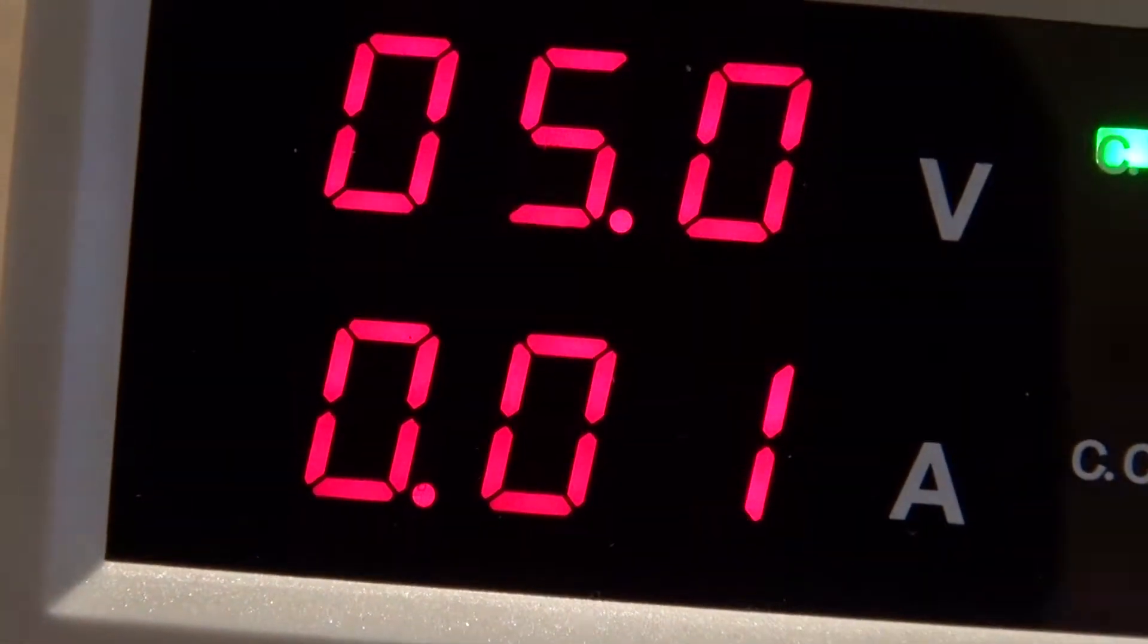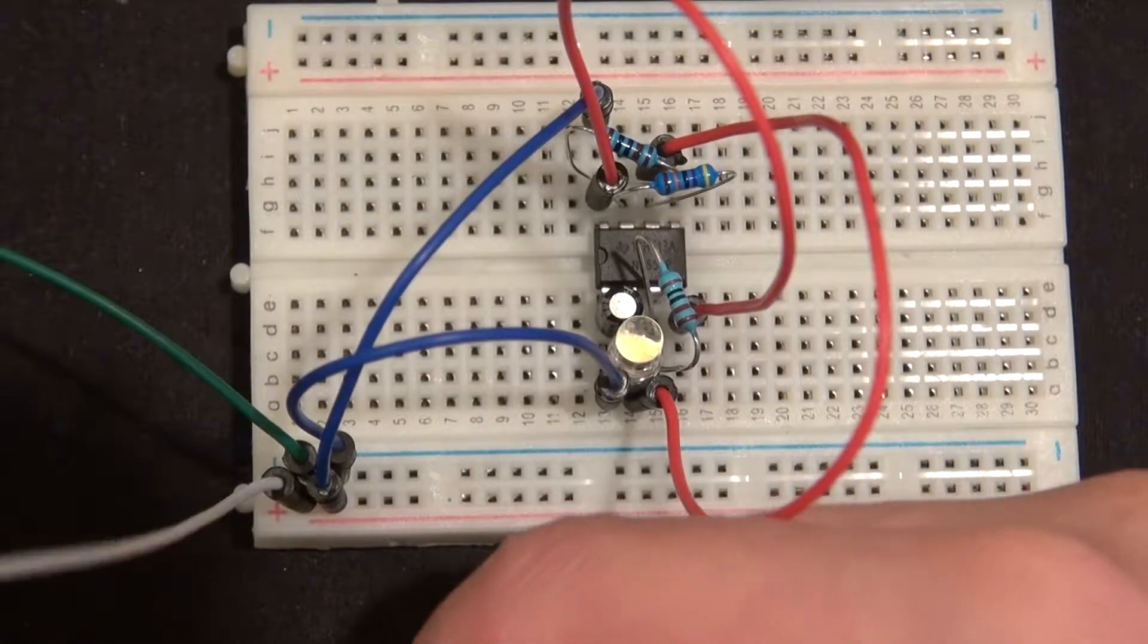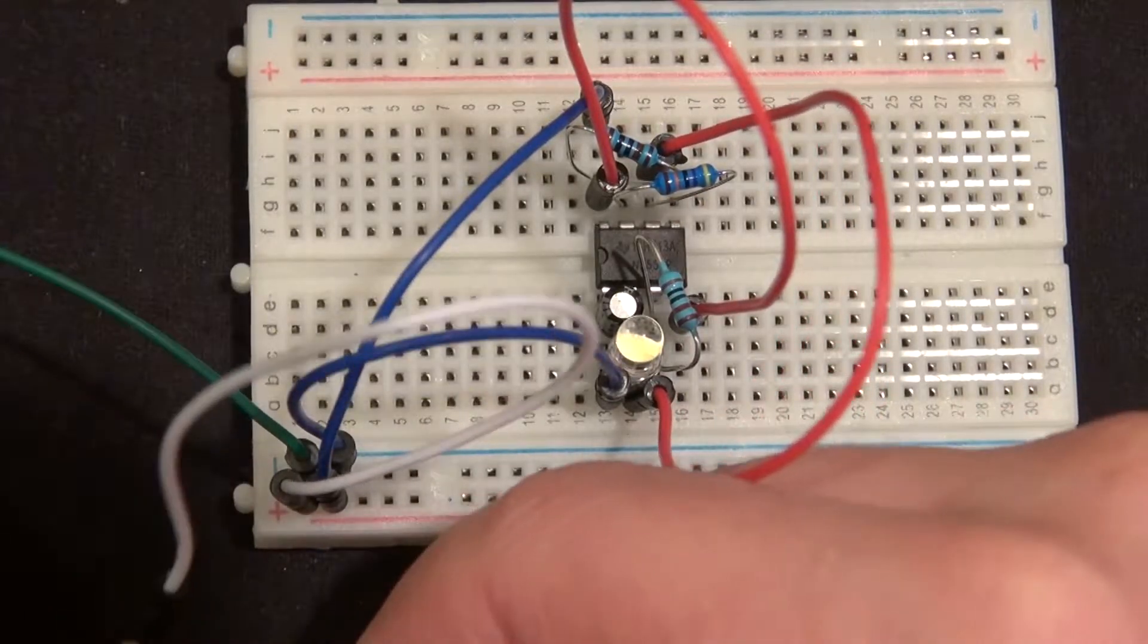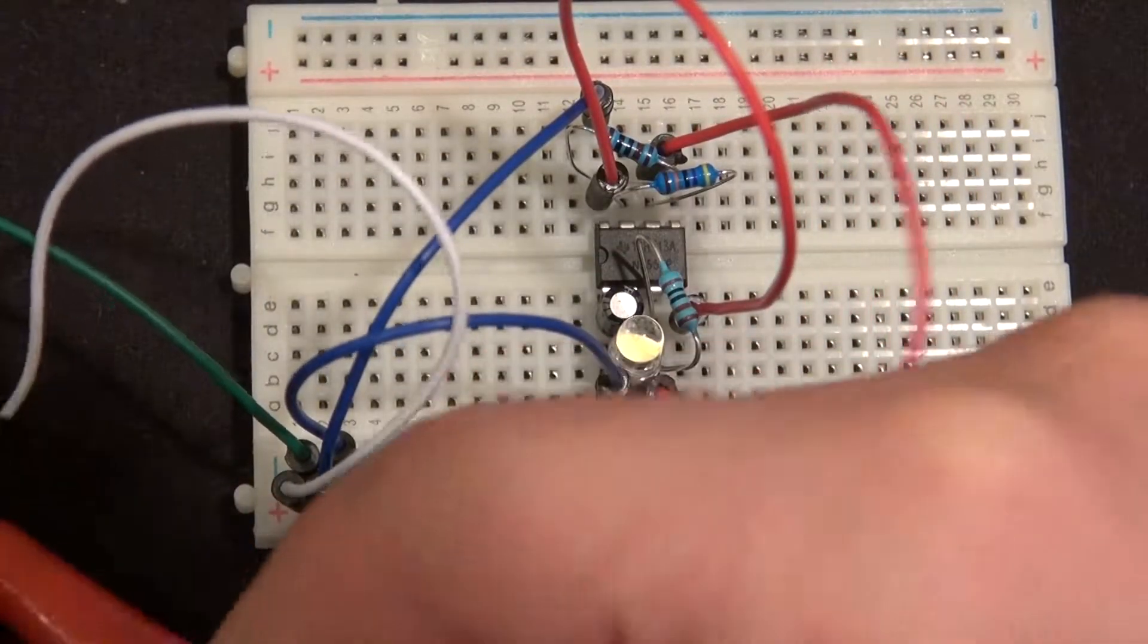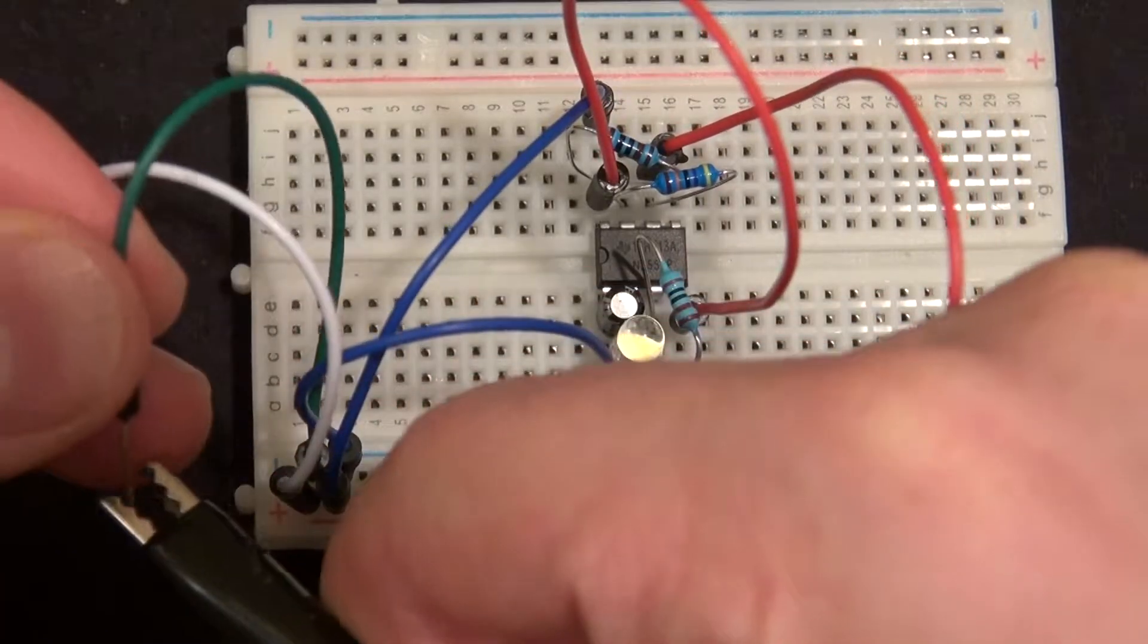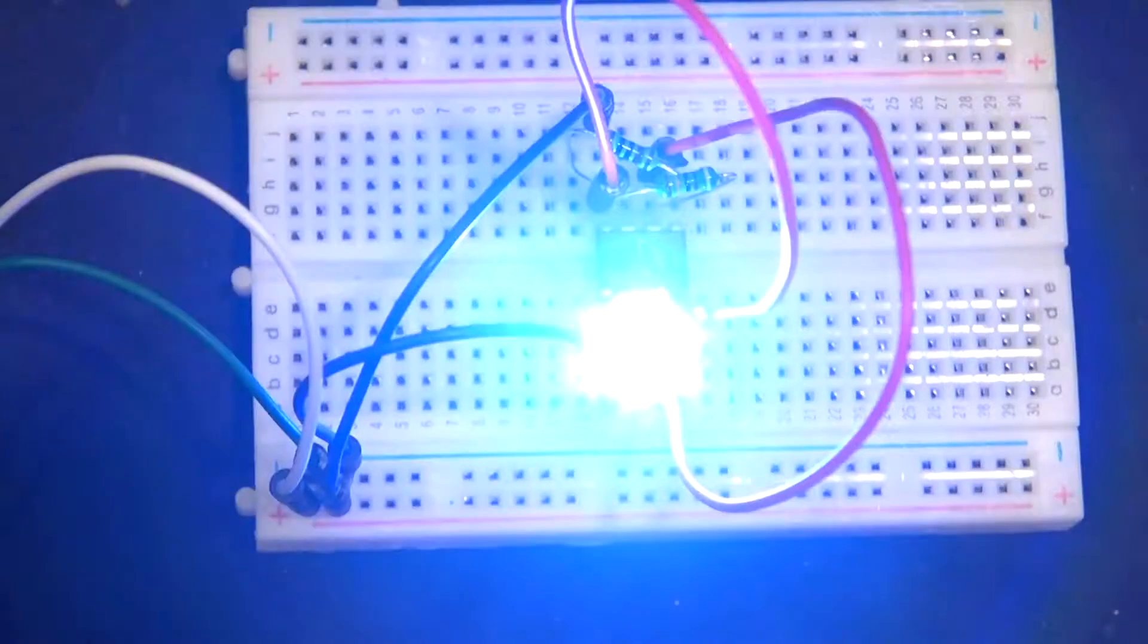Connect to 5 volts. Positive to positive, negative to negative, and this will power your circuit. Just like that.